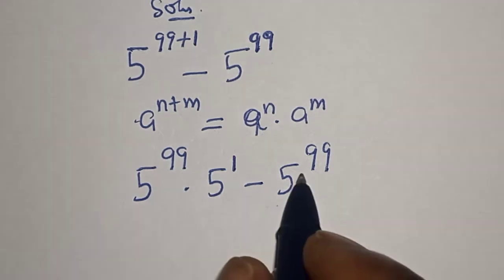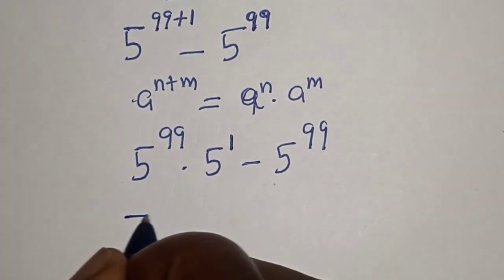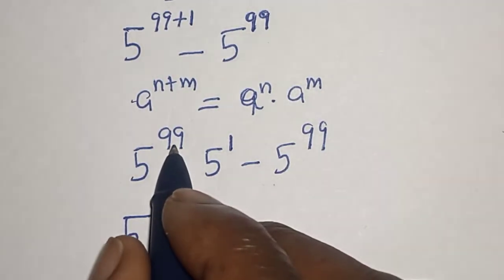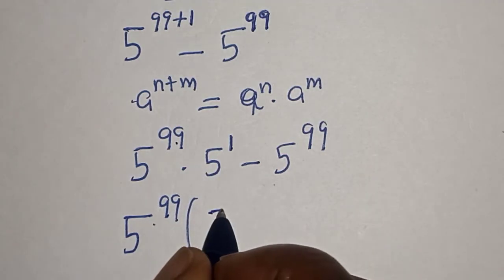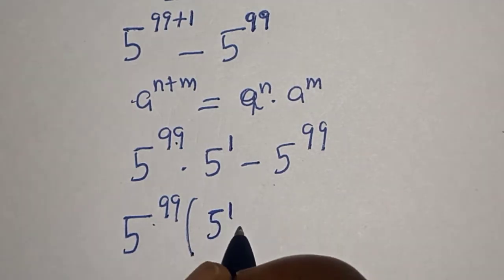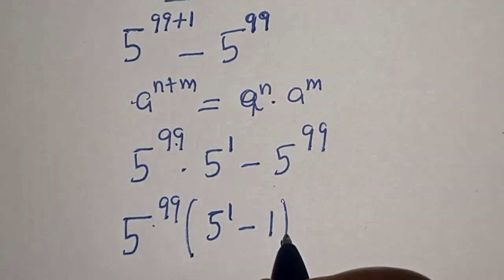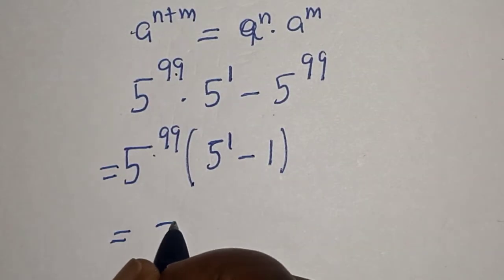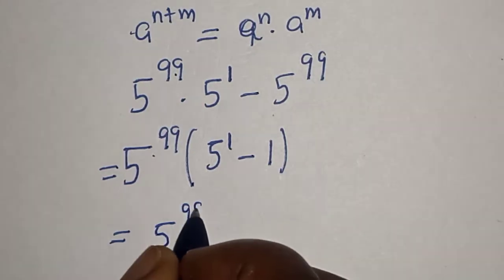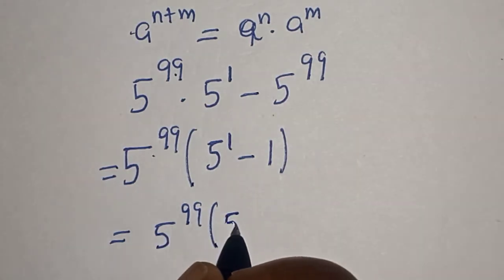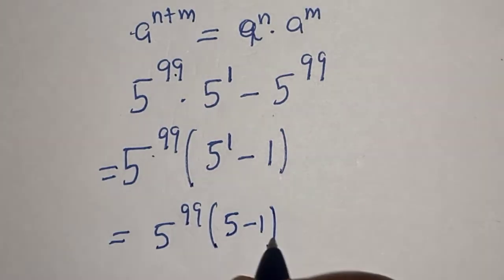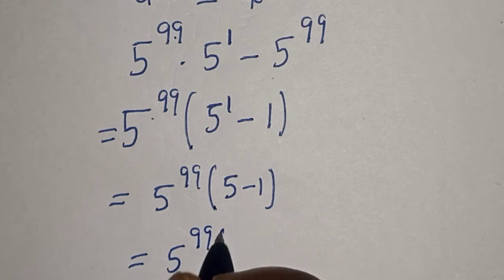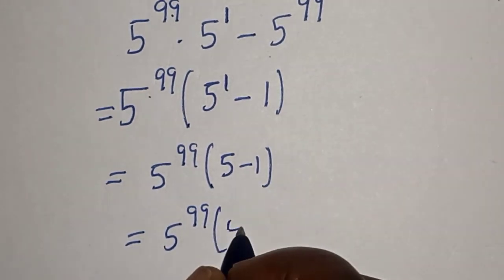Then 5 raised to power 99 is common. Let's bring it out. 5 raised to power 99 multiplied by 5 raised to power 1 minus 1. Then this is equal to 5 raised to power 99 multiplied by 5 raised to power 1, which is the same thing as 5 minus 1.